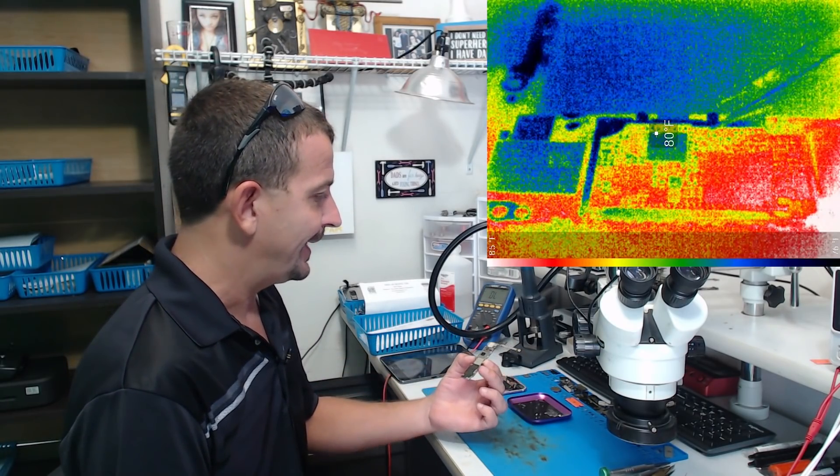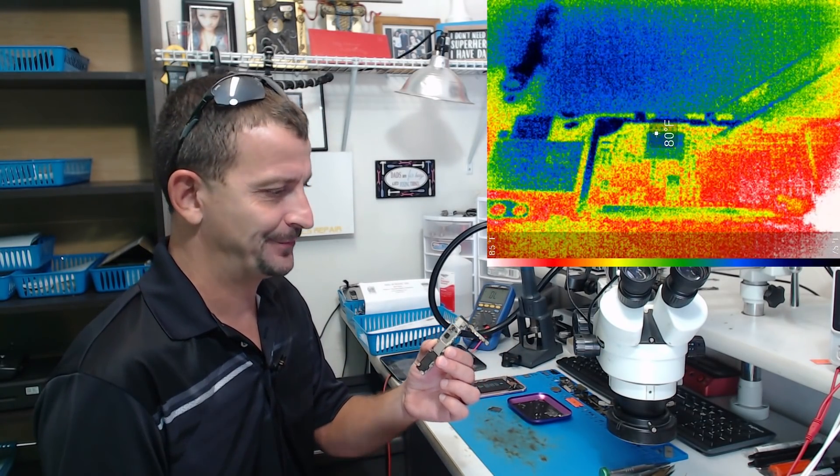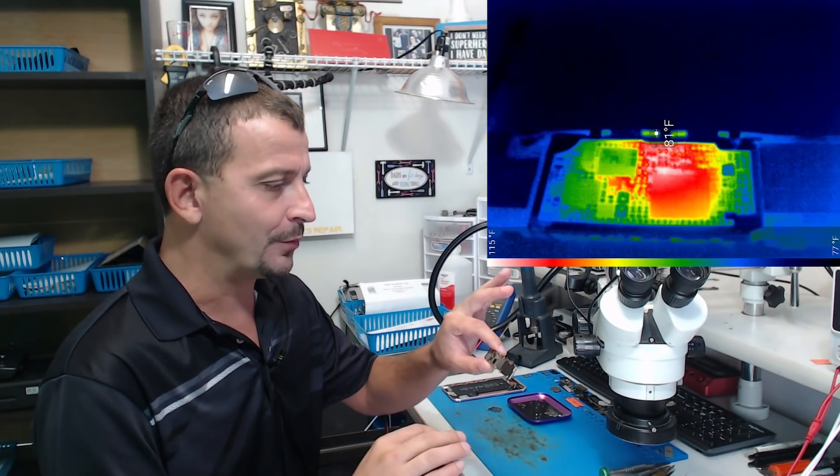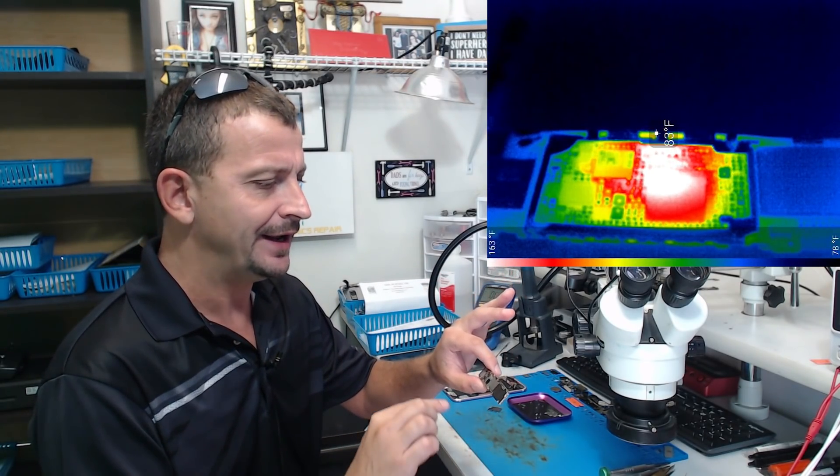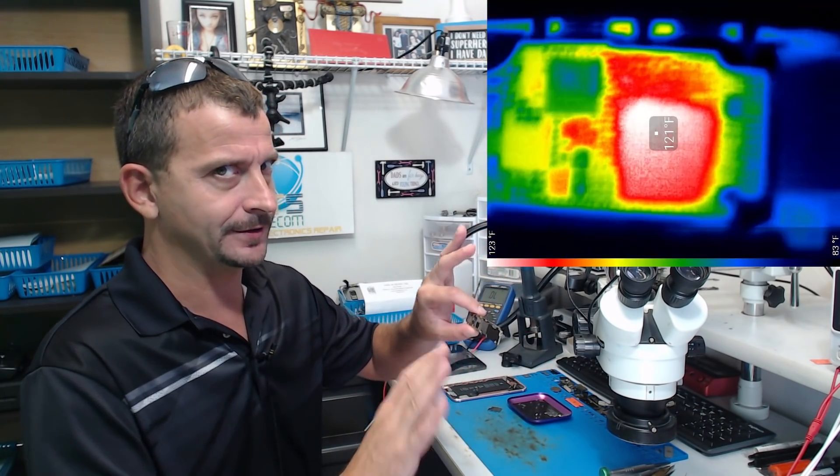So I just spent the last 10 or 15 minutes, maybe a little bit longer tracking down, trying to find what was shorted. Looking at it with a thermal camera, PMIC would get hot. None of the common lines were getting hot. I was expecting to find something along NAND shorted.